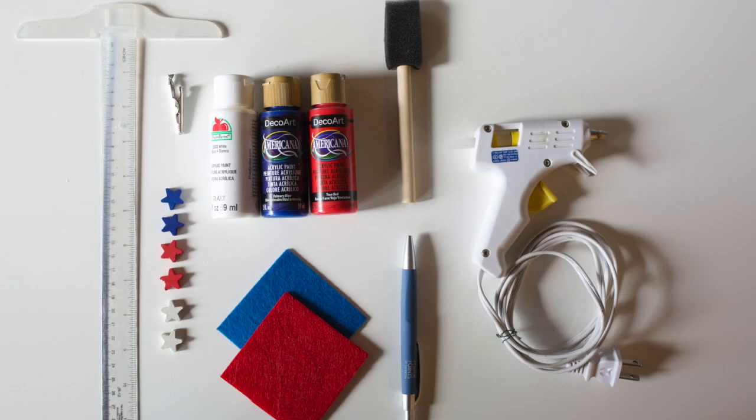What you're going to need is two colors of felt, some small wood stars, some acrylic paint for the stars, alligator hair clips, hot glue, scissors, ruler, and a pen. Get all those things together and we'll get started on this project.